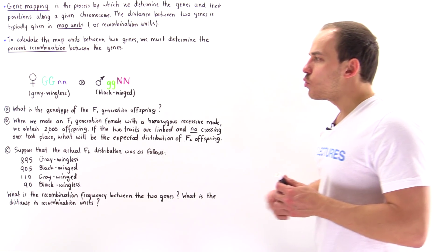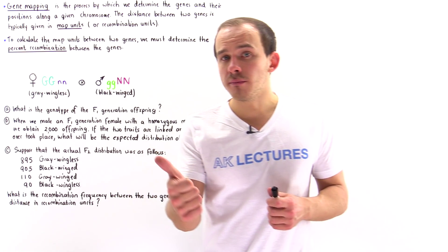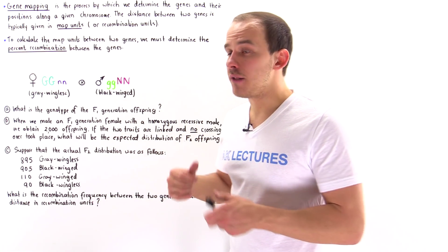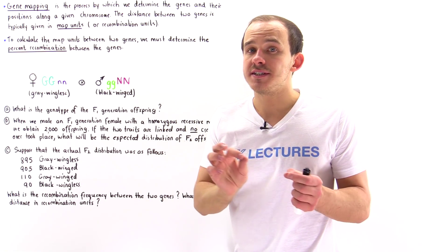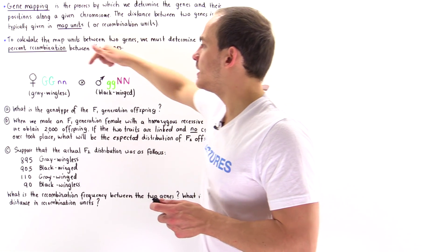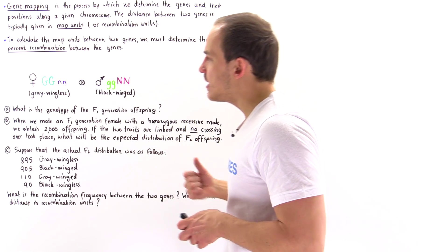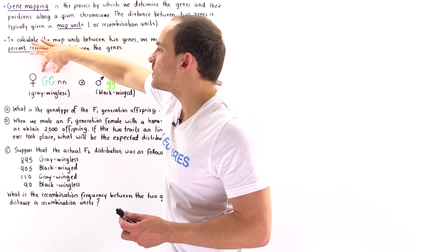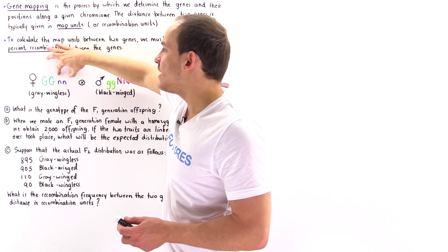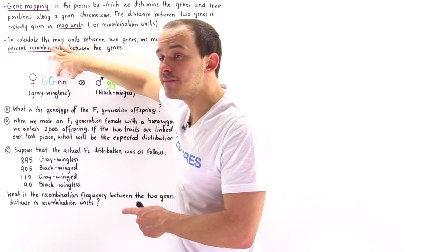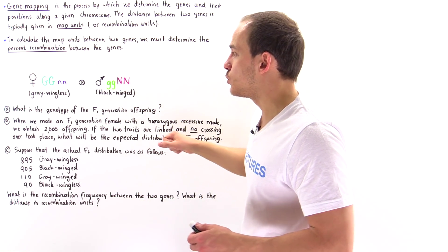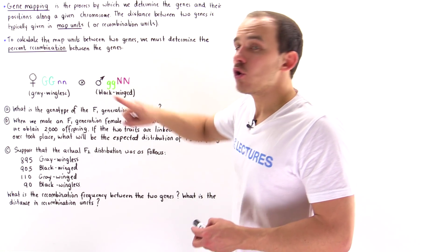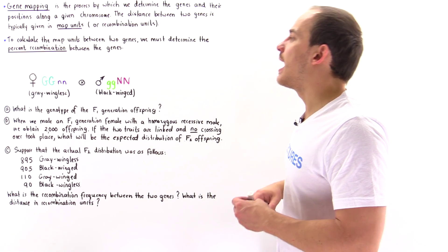We also have two types of wing types: normal wings and vestigial wings. Normal wings, which are functional, are given by uppercase N, and vestigial wings, which are non-functional, are given by lowercase n. In this experiment, we're mating a female that is homozygous dominant for the color trait and homozygous recessive for the wing trait, with a male that is homozygous recessive for color and homozygous dominant for wing type.